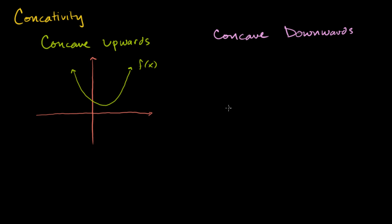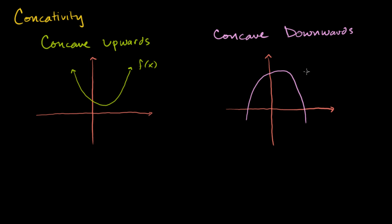Similarly, let me draw an axis to show you what concave downwards looks like. I'm drawing an arbitrary function f of x — the bottom point doesn't have to be in the first quadrant; it's just the general U shape for concave upwards. Concave downwards is just the opposite — it might look something like this. This is some other function g of x, and notice it looks like an upside-down U. Over the entire domain of this function, it is concave downwards. So if it's like a U, it's upwards; if it's like an upside-down U, it's downwards.